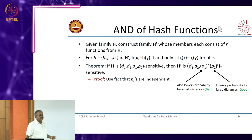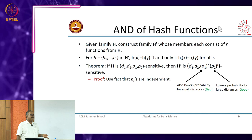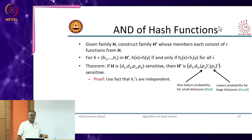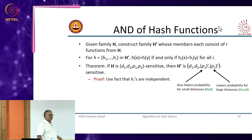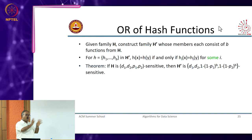When you do an AND construction, you are getting better at eliminating false positives because you have reduced the probability that large distances will hash to the same value. But at the same time true positives also go down, so false negatives can go up.